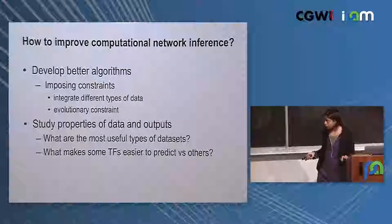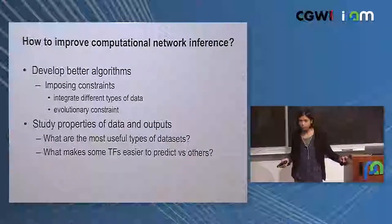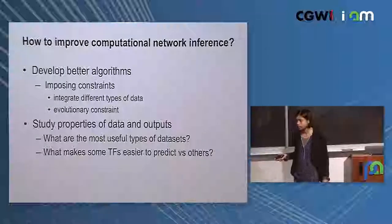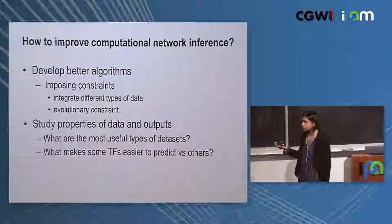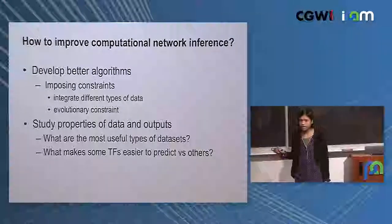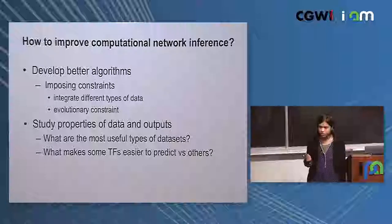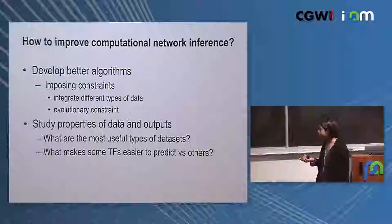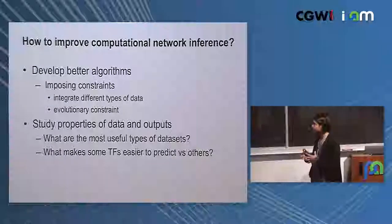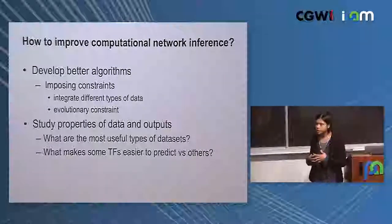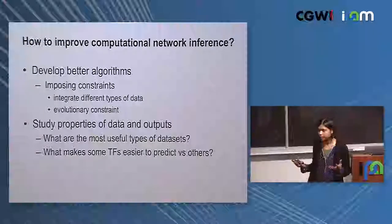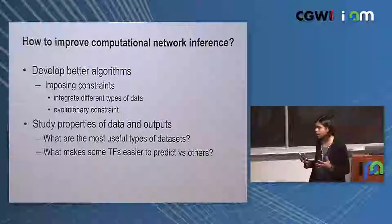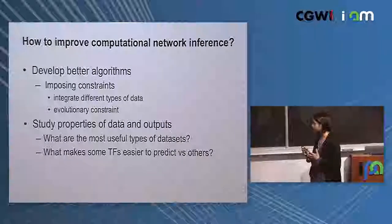What can we do? We can try to develop better algorithms — ones that can leverage auxiliary types of data sets that are informative of a regulatory relationship between a transcription factor and a target gene, putting constraints on the structure we are trying to learn. The other thing is to look at the data and results to see what we are able to predict versus what we are not able to predict.